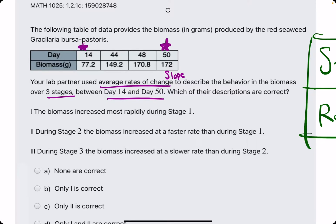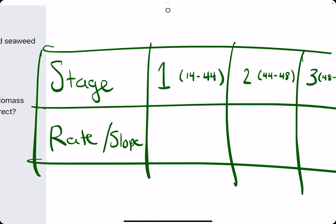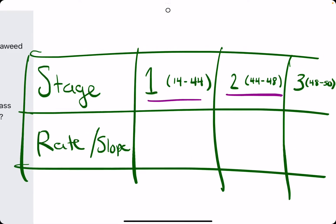In other words, from start to finish on this chart here. So one can only assume that these stages are 1, 2, and 3. So stage 1 represents between day 14 and 44, 2 between 44 and 48, and stage 3 between 48 and 50.